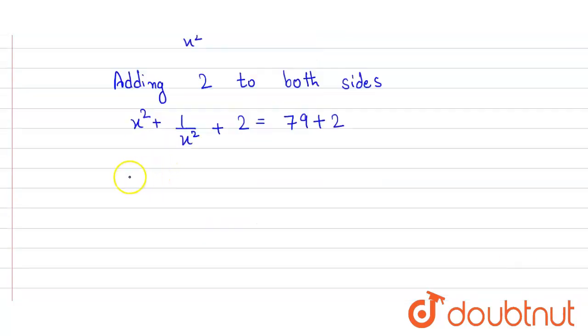This can also be written as x² + 1/x² + 2 × x × 1/x = 81.